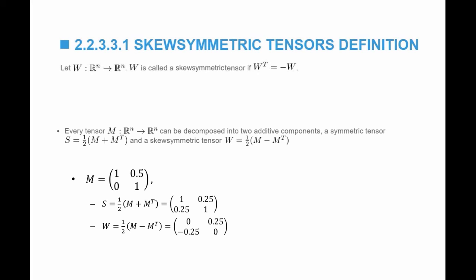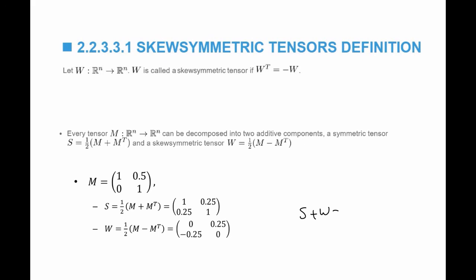Another example, if I think of M as 1, 0, 0.5, and 1, then the symmetric component, half M plus M transpose, will give me the diagonal components that are going to stay the same. 0.5 plus 0 divided by 2 gives me 0.25 and 0.25. This is the symmetric component of the matrix M. The skew-symmetric component will be equal to, when I add M and then subtract M transpose and then take half, I will get these components. And of course you can see that S plus W is equal to M.